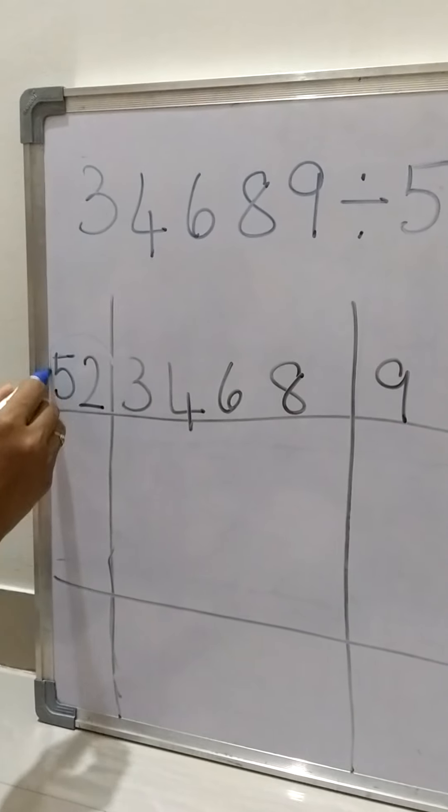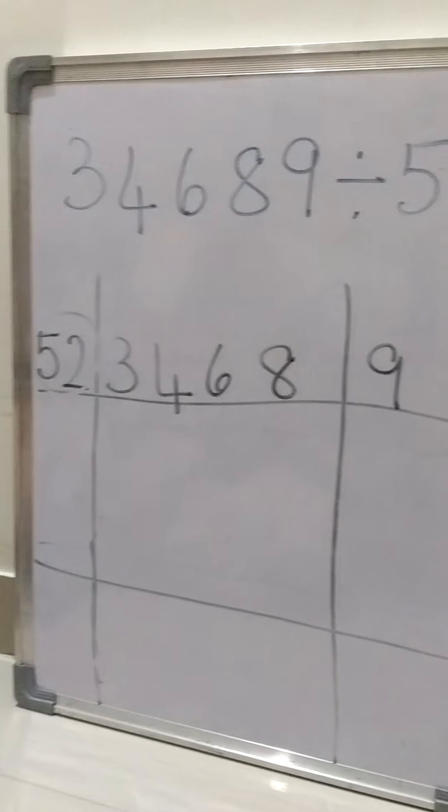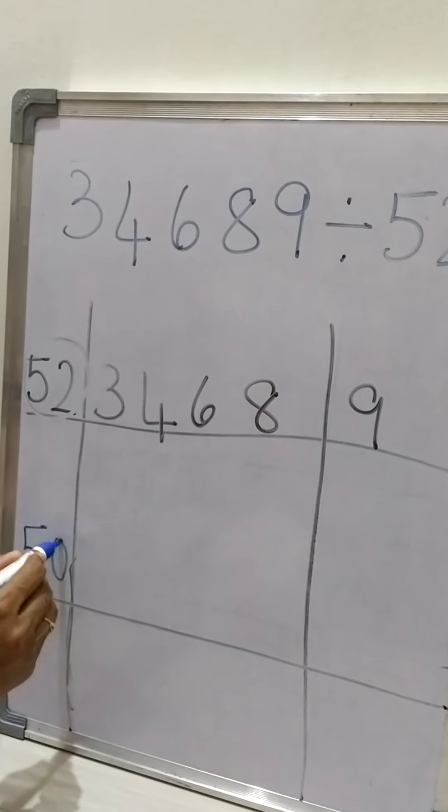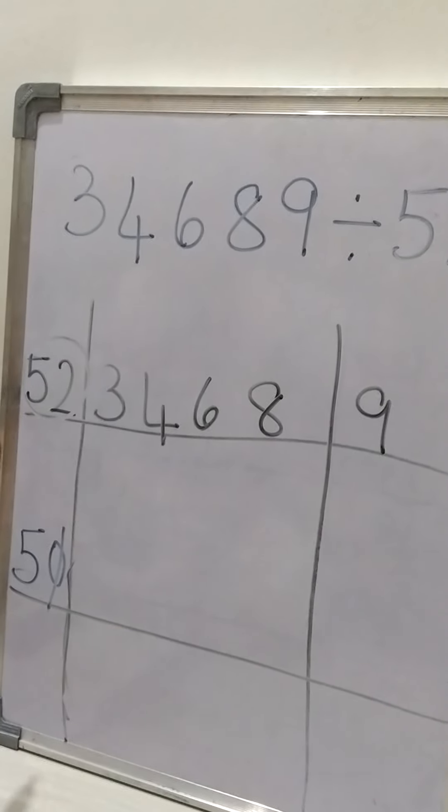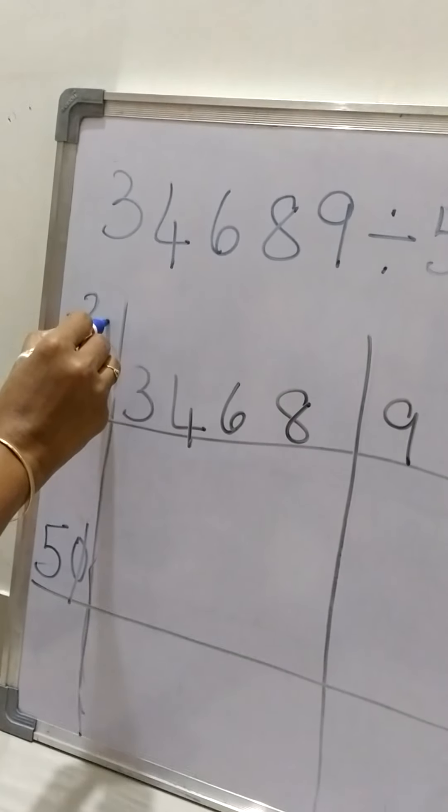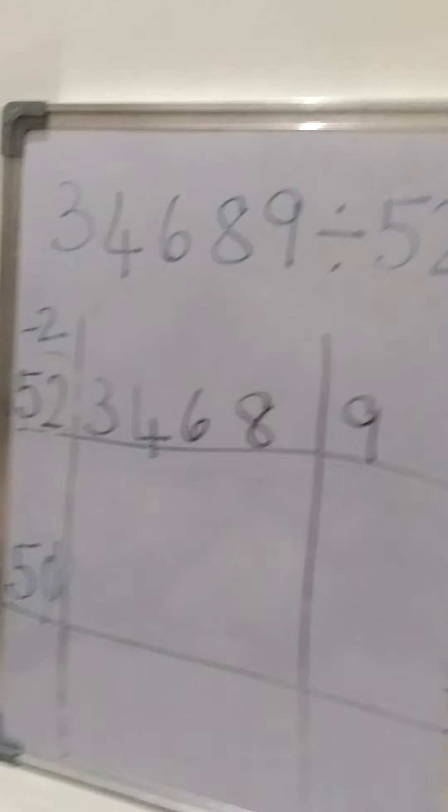Now our first step is we need to round off to the nearest tens, that is 50, right? So we have to write 50 and we need to cancel the 0. Now we minus 2 to get 50, right? So our key corner number will be minus 2.